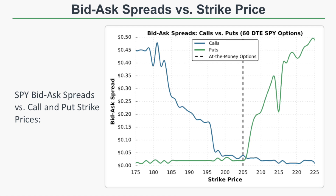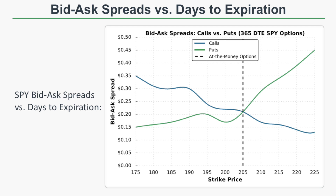Now looking at SPY options with 365 days to expiration: the at-the-money options with 60 DTE had bid-ask spreads of roughly 2.5 to 5 cents. But with a year until expiration, at-the-money options have spreads of 15 to 20 cents and out-of-the-money options are around 15 cents. Two things contribute to this: longer-term options are more expensive and therefore naturally have wider spreads, and they typically have less trading volume than near-term options.